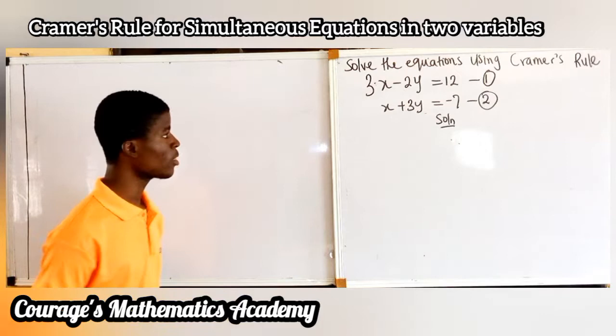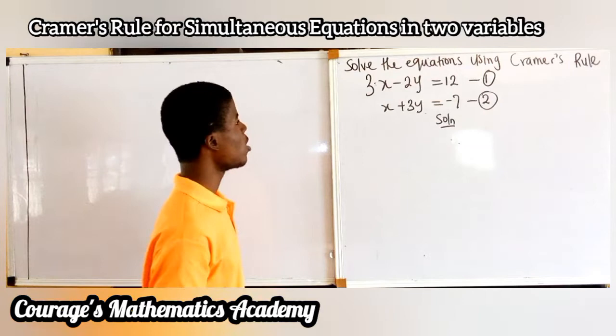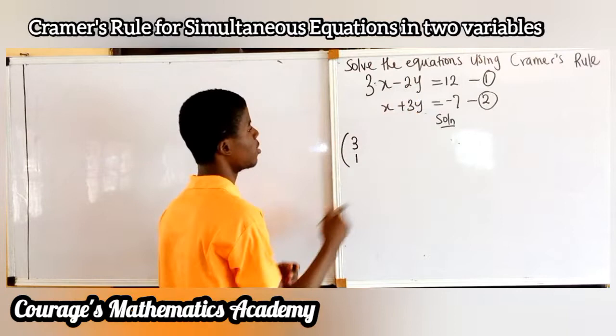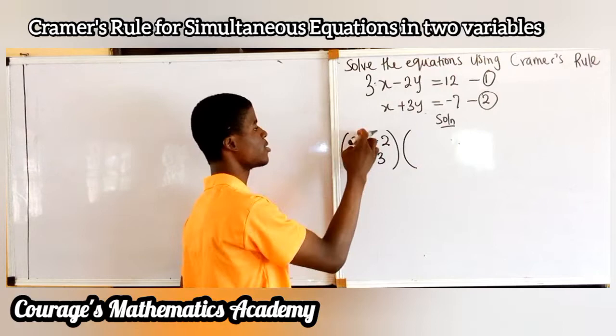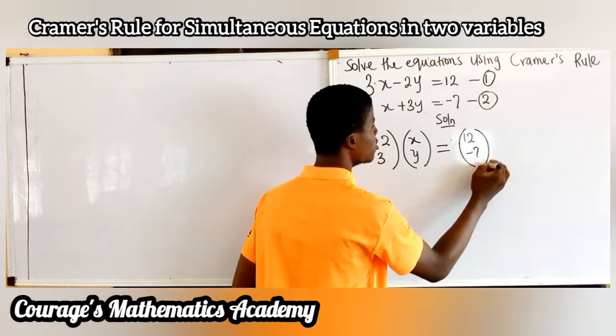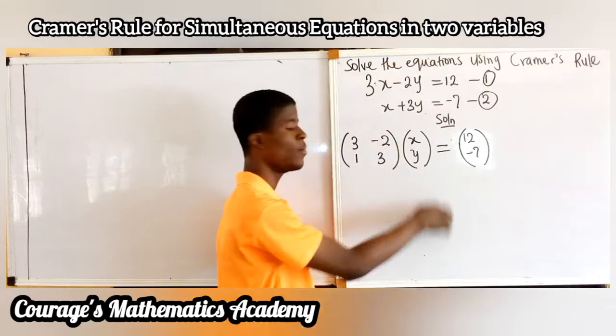To solve these two equations, first of all, let's write them in the form of a matrix. The coefficients of x are 3 and 1, so write 3 and 1. The coefficients of y are minus 2 and 3, so write minus 2 and 3. This column is for x and this column is for y, and this is equal to 12 and minus 7. We have succeeded in writing these equations in the form of a matrix.